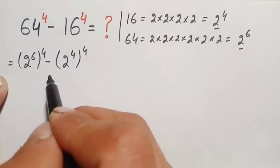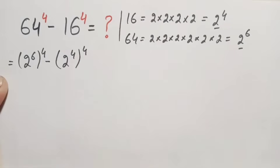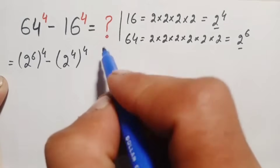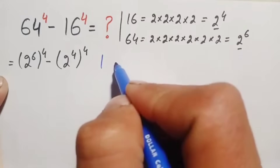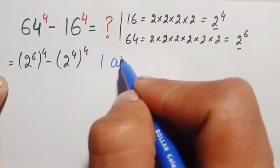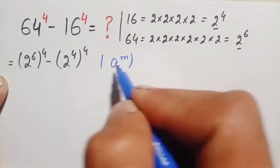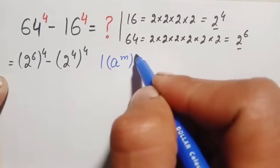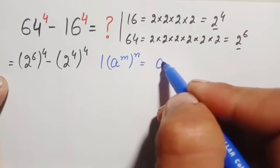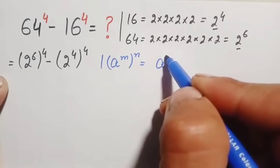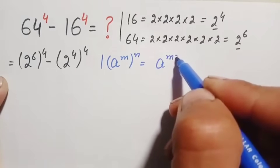In these two terms we will use the exponential identity: a raised to power m, whole raised to power n, can also be written as a raised to power m times n. We multiply the powers with each other.